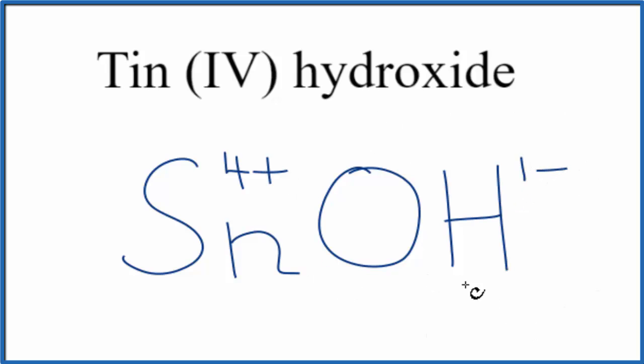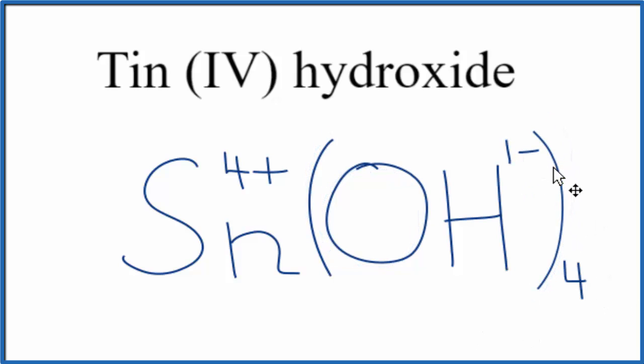So if we had 4 of these hydroxide ions, that would do it. So if we put a 4 here, put parentheses around the hydroxide, then we'd have 4 times 1-. That's 4-. That would balance out the 4+.